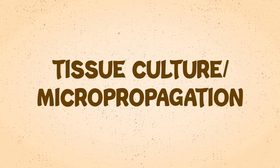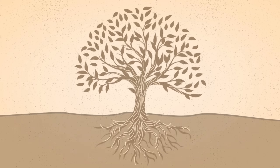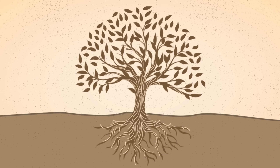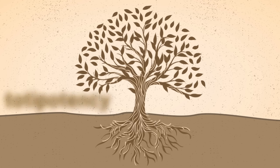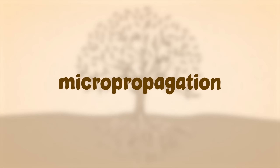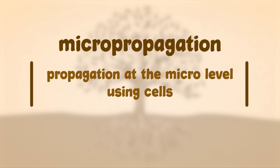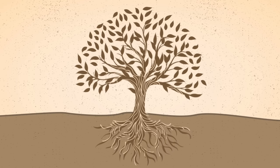In this video you will learn about the topic tissue culture, also known as micropropagation. The members of the plant kingdom possess a unique property in their cells called totipotency, which is utilized by humans to perform tissue culture. This involves propagation at the micro level, and hence is also called micropropagation.